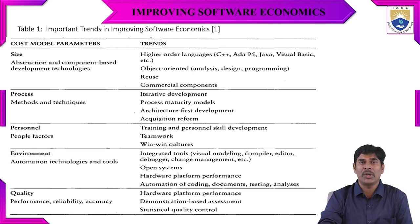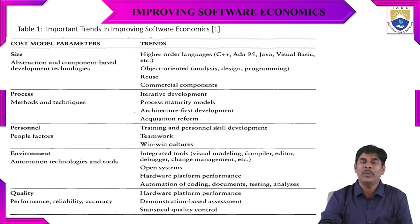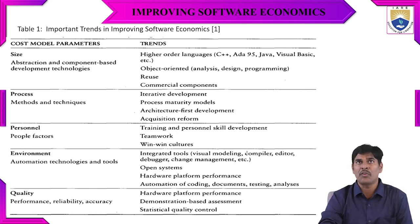Next is object-oriented design, where we use rational tools or UML to analyze design and programming for reuse, reducing software size. We also need to implement commercial components to minimize software size. Higher-order languages and object-oriented tools such as UML diagrams help generate automatic code and enable reuse. Finally, we use commercial components for further size reduction.